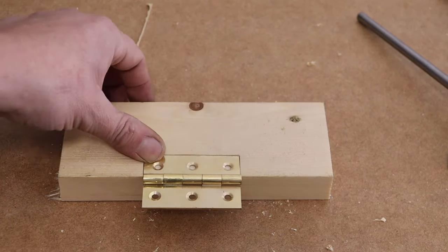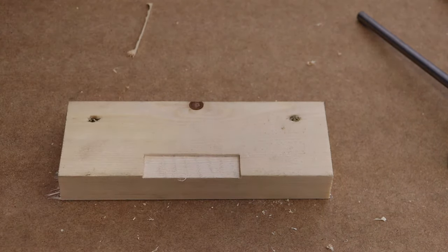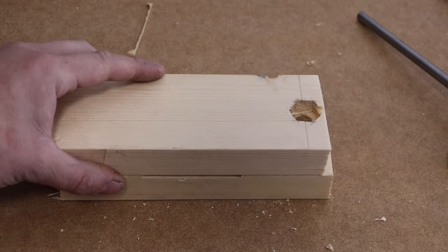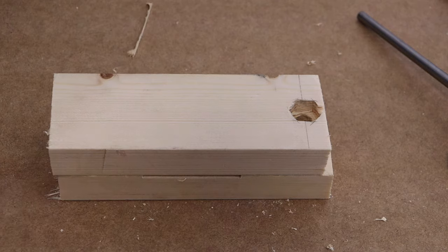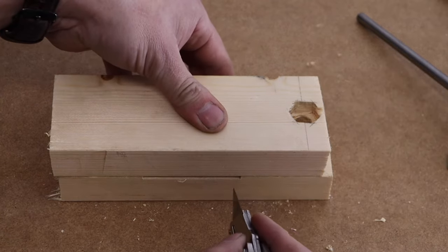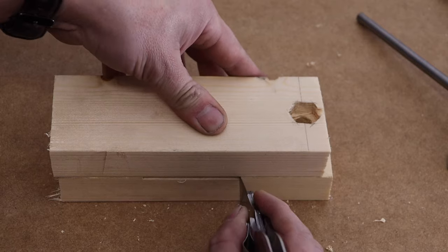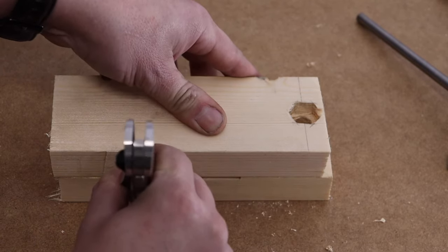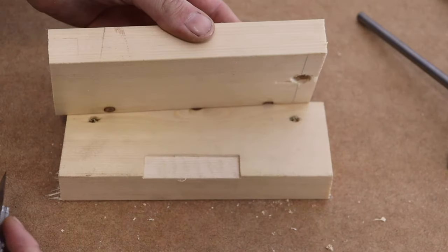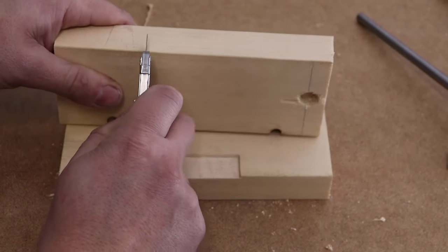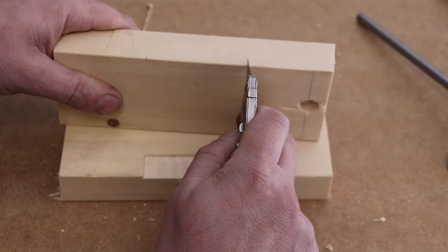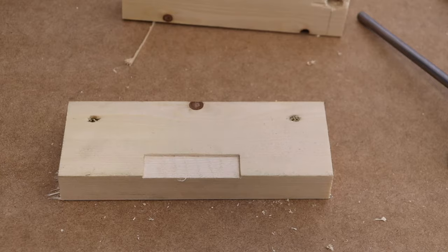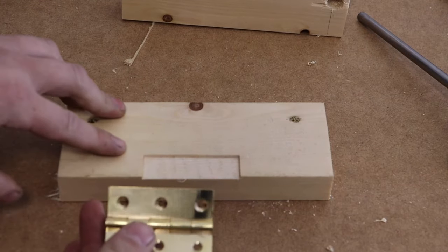So we can actually go ahead and fix this hinge in place, but before we do so, we're going to transfer our marks onto our other piece because that's going to make it a little bit easier when we come to do that. So the way we're going to do that is just with our knife, put it in on that edge and mark our points. Now let's just transfer our lines across and deepen them up a little bit just so we can see them, and we'll put that to one side for cutting in a moment.